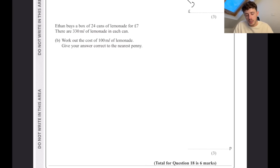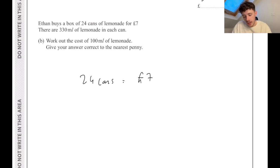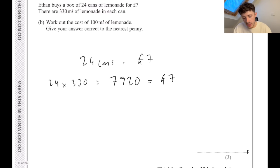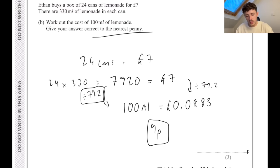Ethan buys a box of 24 cans of lemonade for £7, 330 millilitres in each can. Work out the cost of 100 millilitres of lemonade. So 24 cans is £7, and in each can there is 330 mils. So 24 times 330 is 7920, which is the same as that £7. We want to get that down to 100 millilitres. If you do 7920 divided by 100, that tells us we need to divide by 79.2. Which means that we can divide seven by that same number, and that gives us an answer of 0.0883 pounds, which is going to be nine pence to the nearest penny.